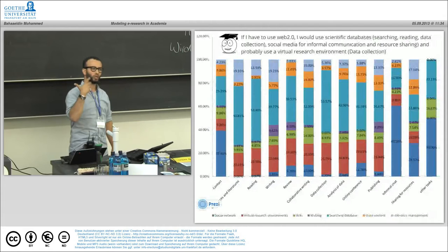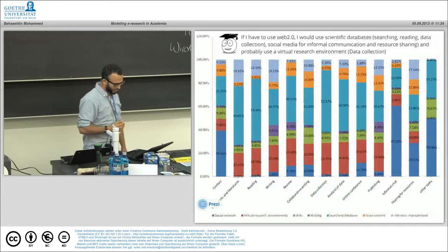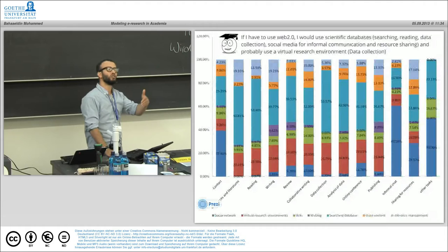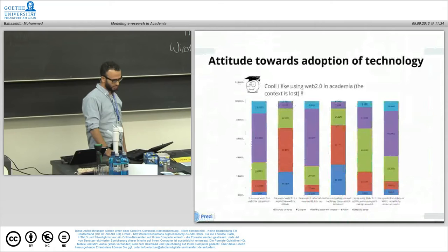In case they have to use or are asked to use some kind of web 2.0 services, we find if they have to use web 2.0, they would use scientific databases, as colleagues said before, social media for informal communication and resource sharing, and probably use a virtual research environment. In terms of data collection—not sharing—they collect data from this kind of environment.